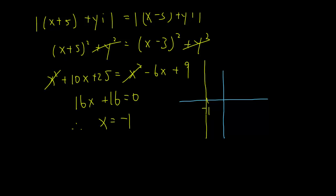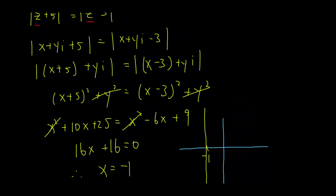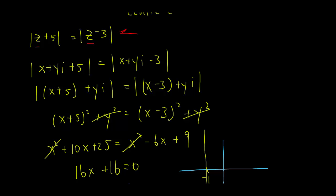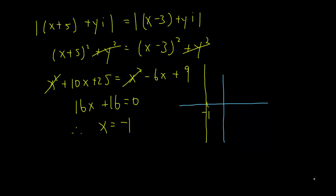When we plot this, x equals negative one gives a vertical line here on the diagram. That's the geometric interpretation — any point on this line satisfies the constraint. Each locus on this line is a solution. So to summarize: replace z with x plus yi, group the terms, and solve the equation. If you have questions, leave a message or email me.